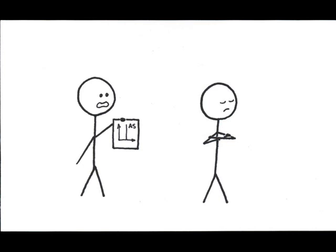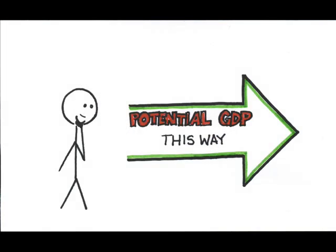Sometime later, however, the new classical model emerged. OK, so we're not always at our potential, but when we're not at that level, it's only for short time periods because the economy self-adjusts over time to get back to its full employment level.